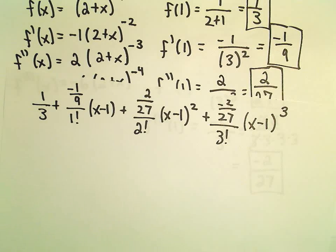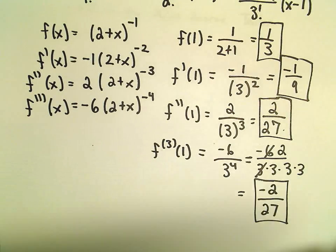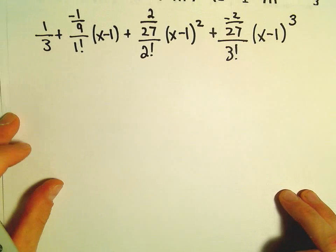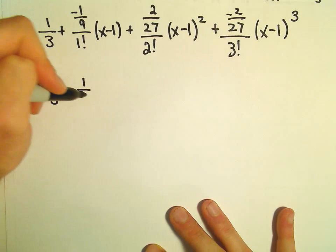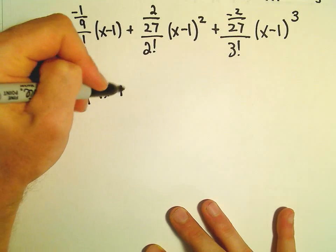Alright, so that's 1 third minus 1 ninth times x minus 1.